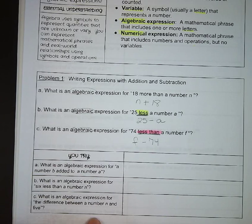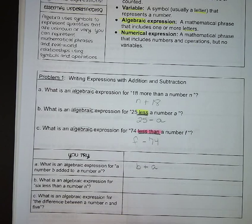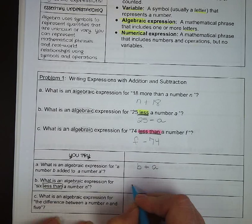So what is an algebraic expression for a number b added to a number a? So we're starting with b, we're adding a. b plus a. Okay, what is an algebraic expression for 6 less than a number n? So we're starting with n, we want to know what's 6 less than, so n minus 6.